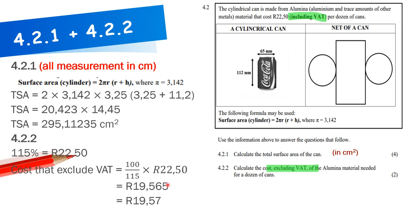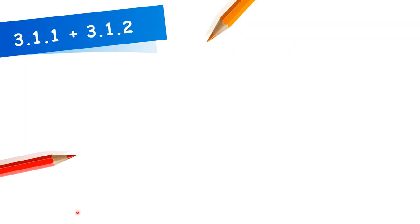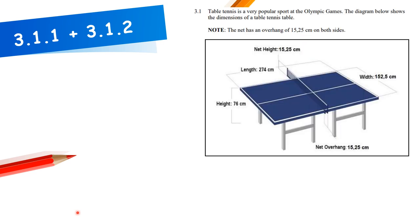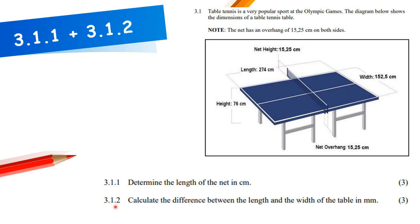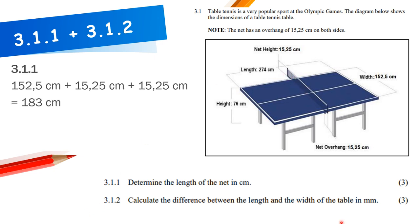Table tennis example: the net has an overhang of 15.25 cm on both sides. Determine the length of the net. Take the width of the table and add the overhang on both sides: the answer is 183 cm.